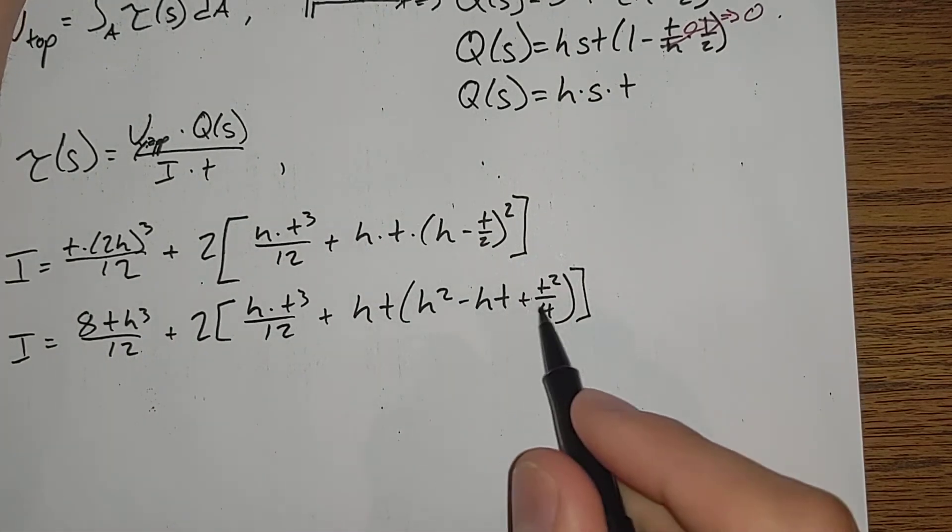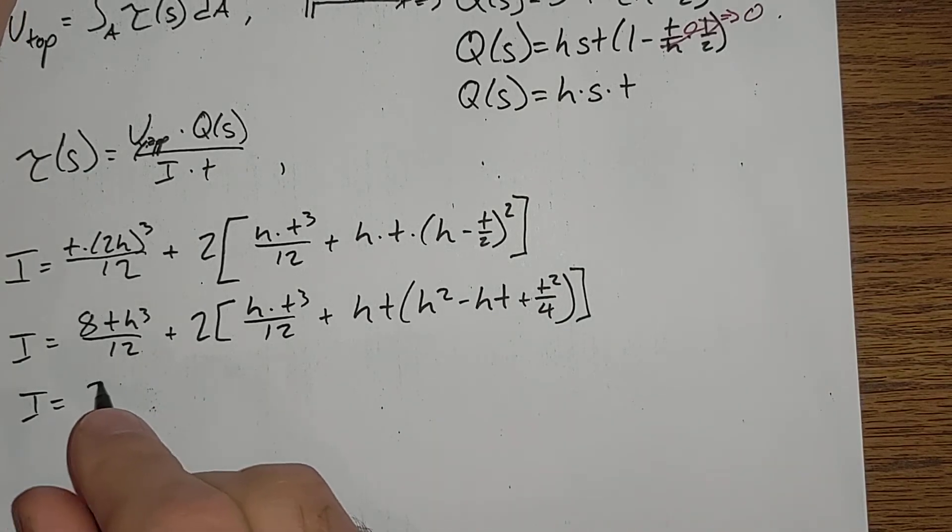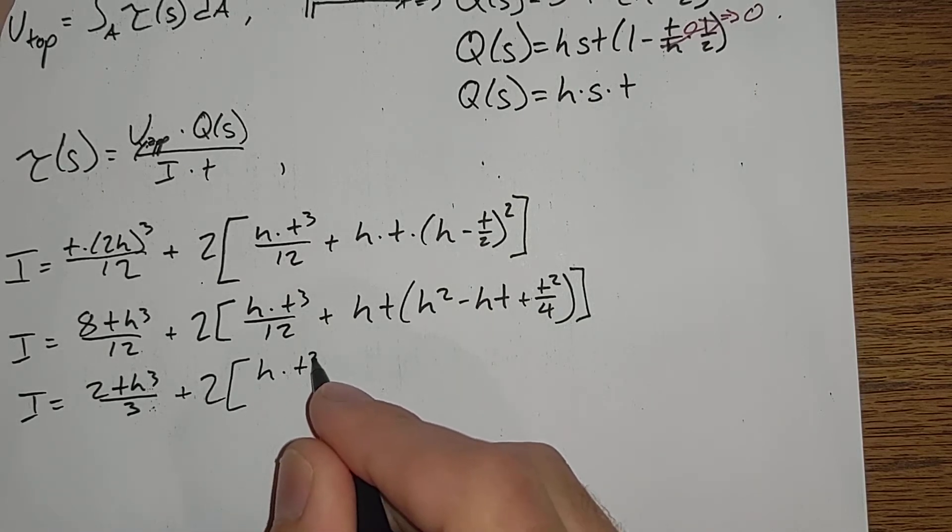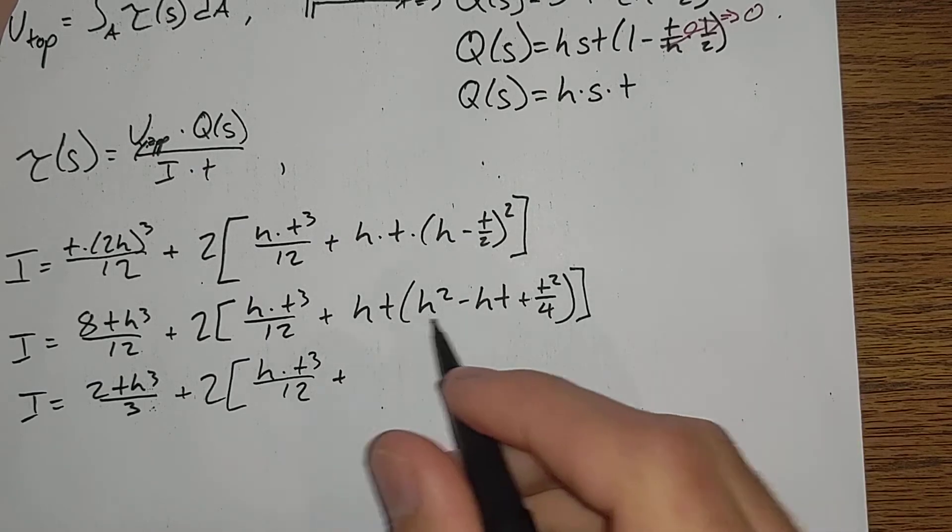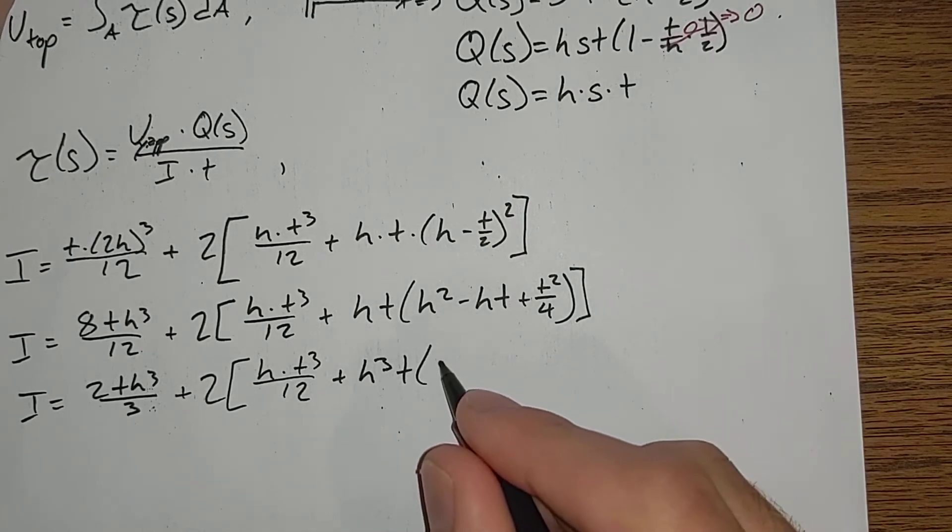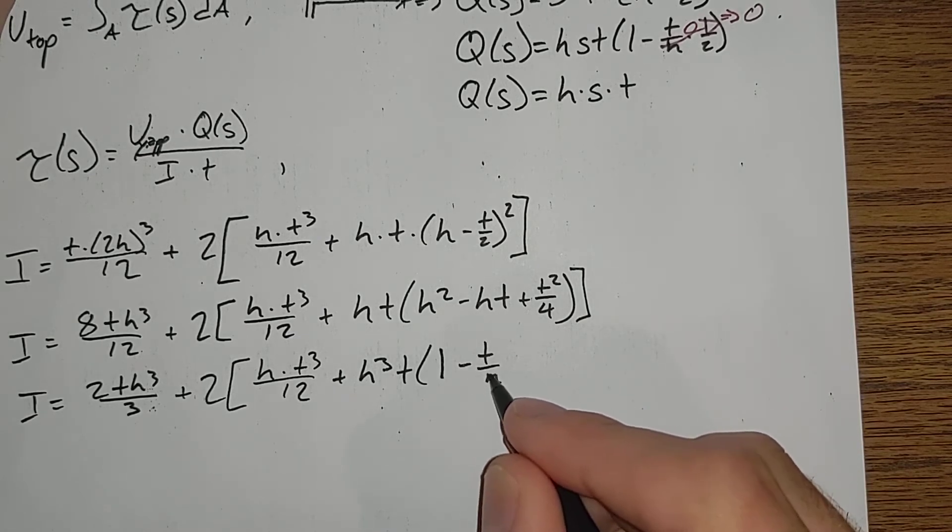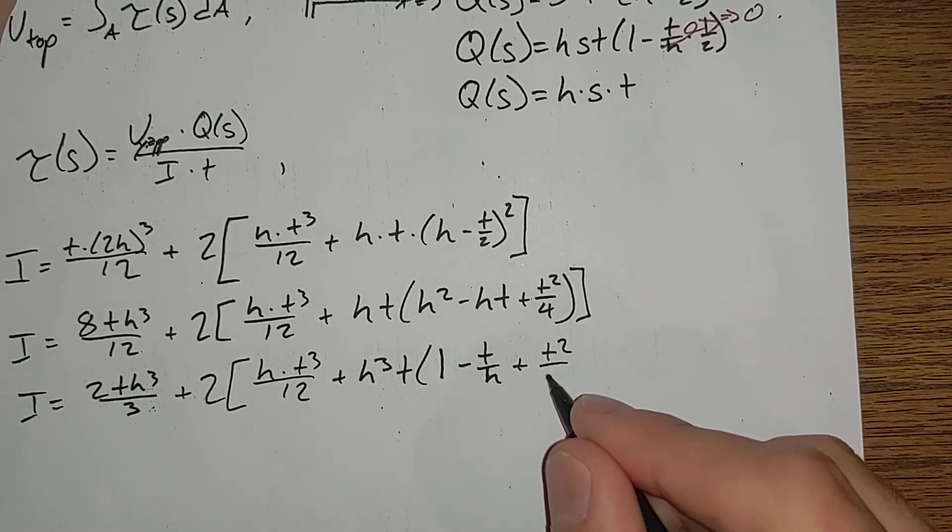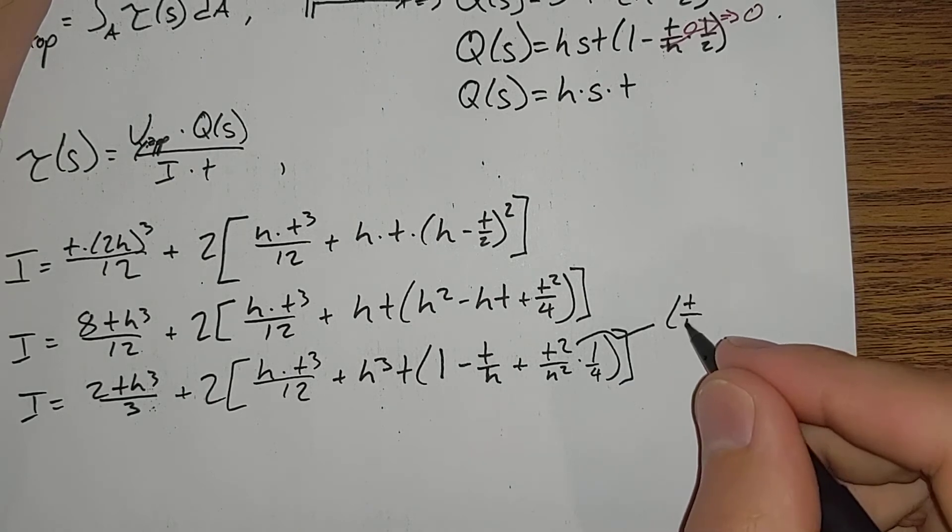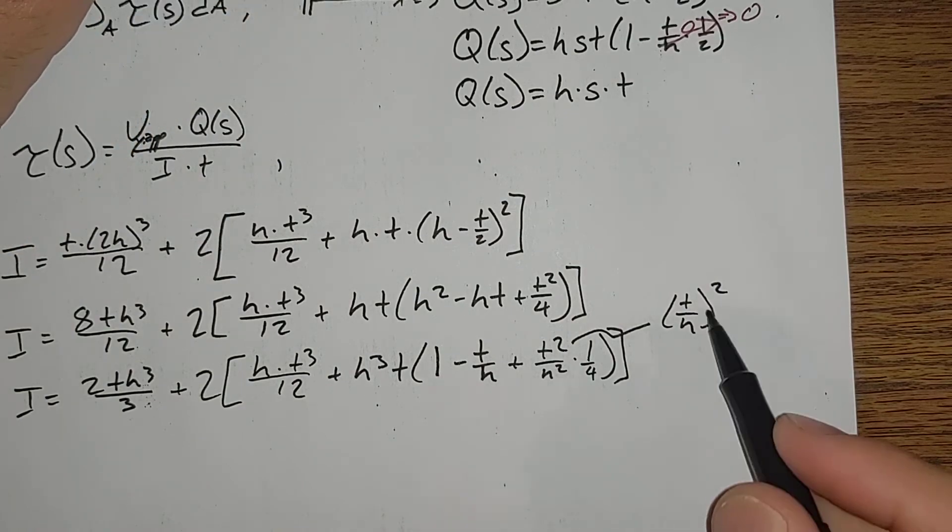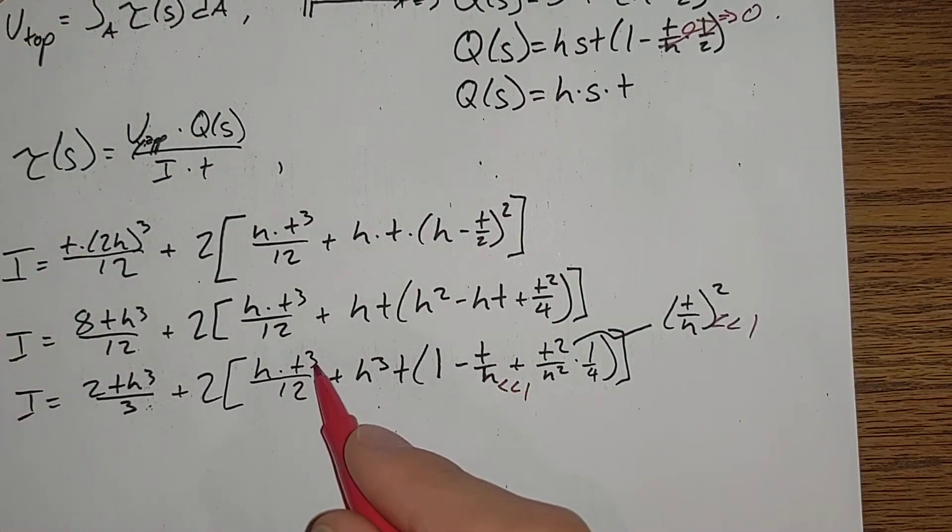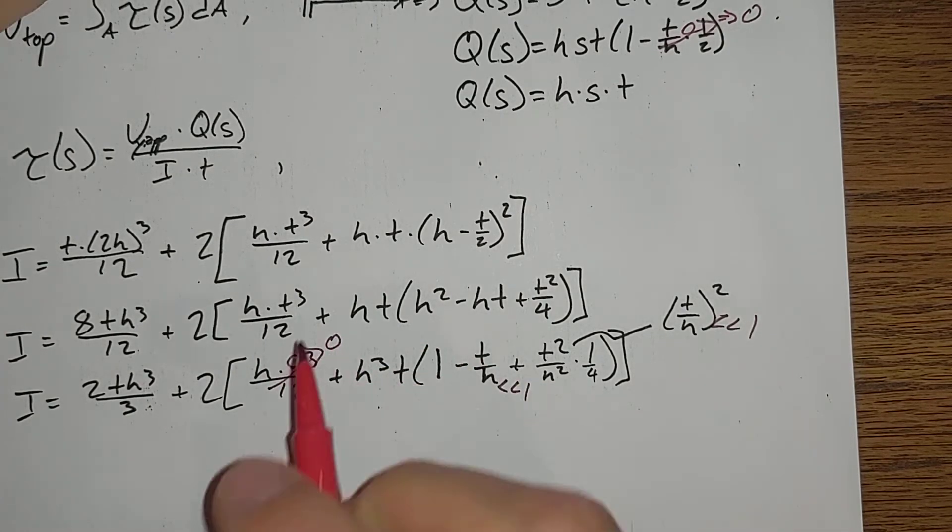We will divide all of this by h to pull it out. We'll reduce this, I is equal to 2th cubed over 3, plus 2ht cubed over 12. So, again, we're dividing all of this by h squared here, so we'll have h cubed times t. We've got 1, we've got t over h, we've got t squared over h squared. t squared over h squared is the same as t over h squared. That's much less than 1. And t cubed is very small, so we're going to zero that out as well.